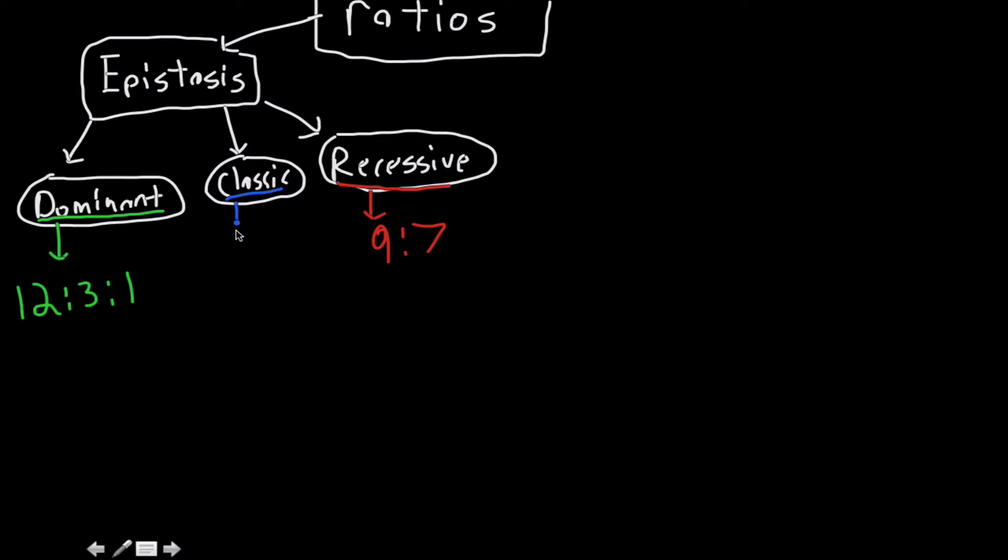And then for classic epistasis, I'm just going to clarify that. What you see there is usually a linear epistasis, I guess to say, is 9 to 3 to 4.